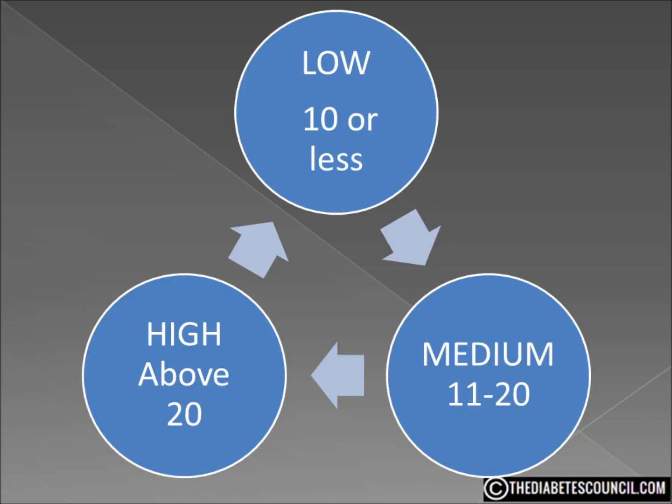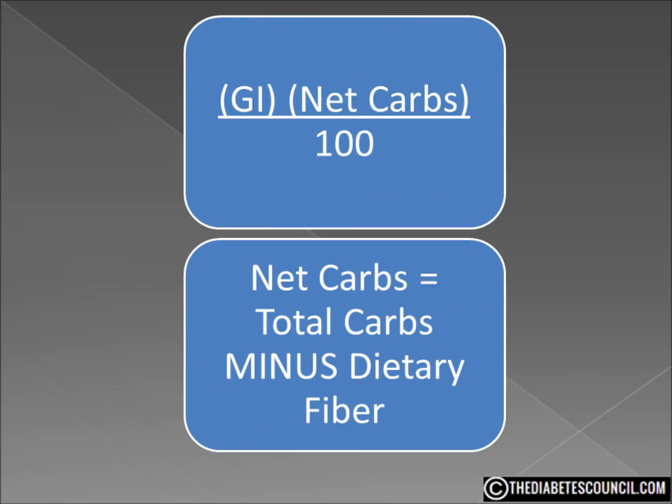Conversely, some foods have a relatively low GI but could have a high GL. A slice of vanilla cake with frosting — one serving has a GI of 42, which is low, but the glycemic load is 24, which is relatively high.